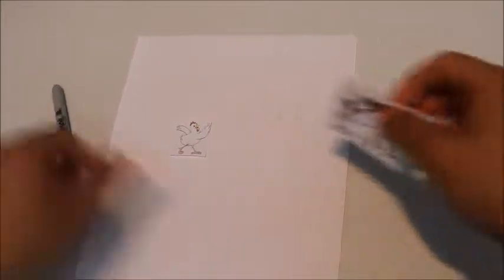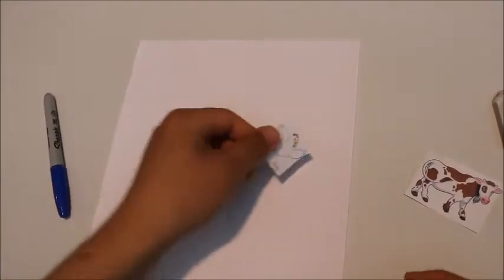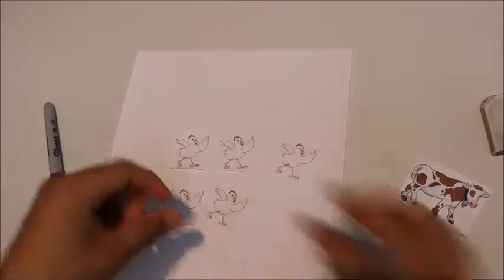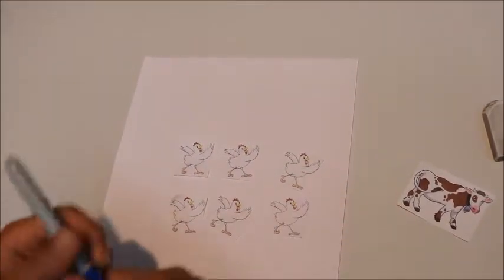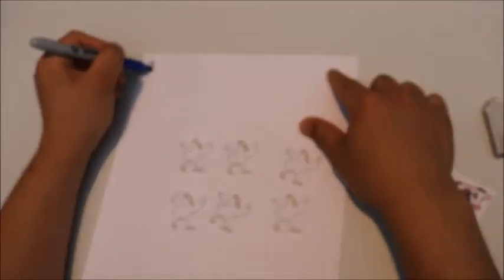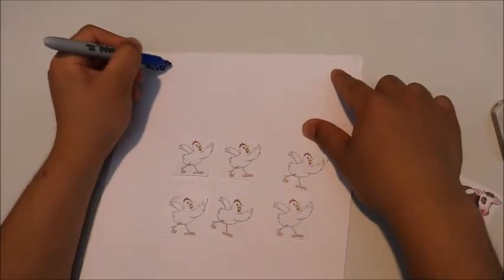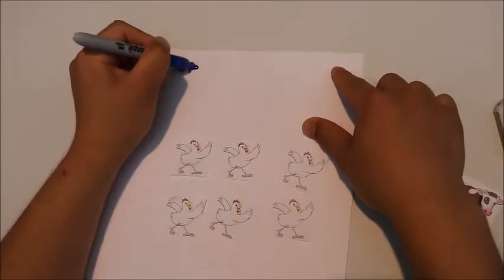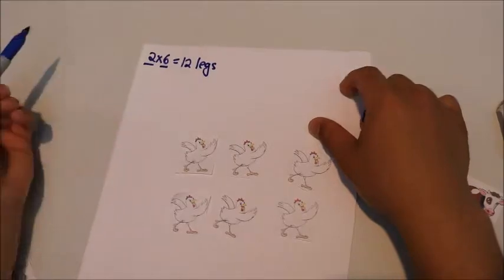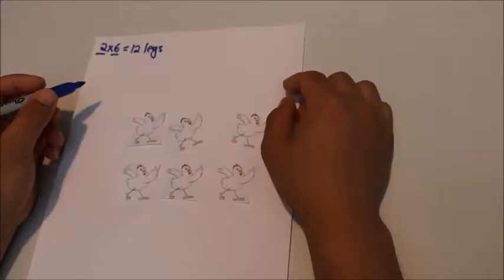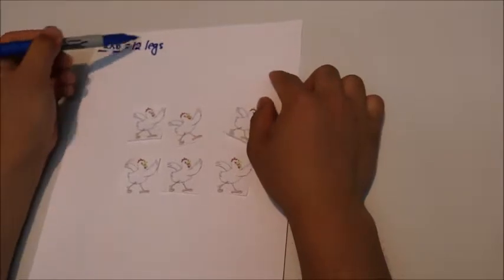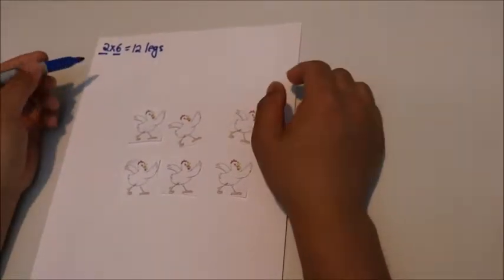So, if Old MacDonald had only chickens, there would be 6 heads and 2 times 6 or 12 legs, because each chicken has 2 legs and there are 6 chickens. We know that there are 18 legs and 12 is definitely not equal to 18.